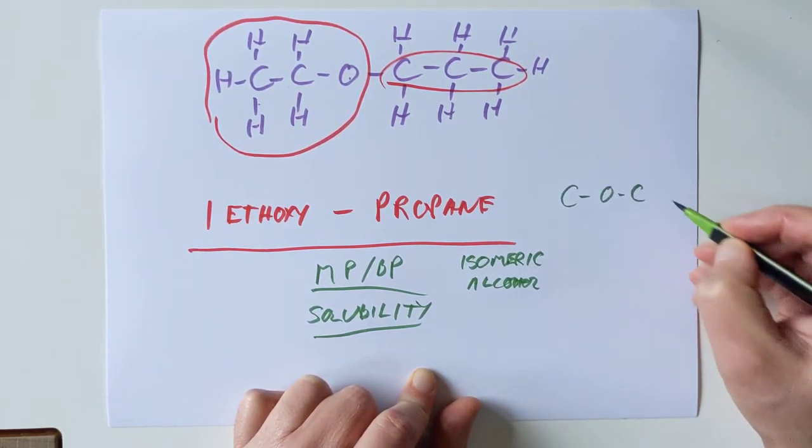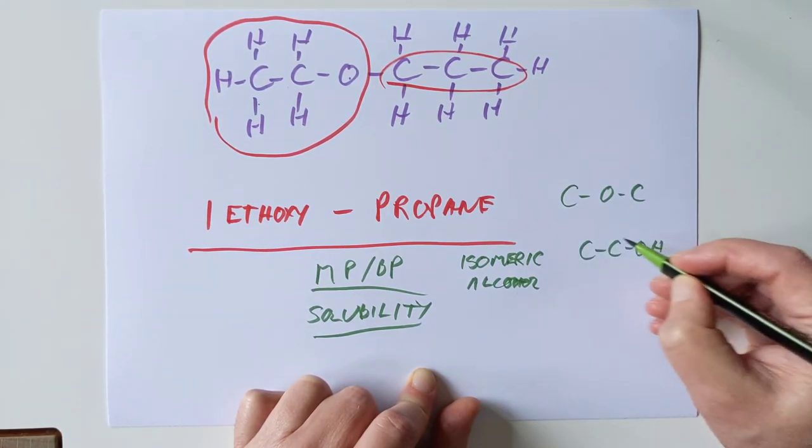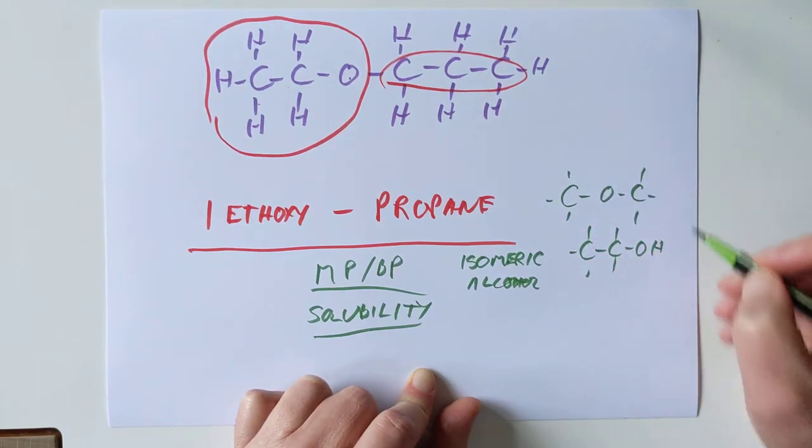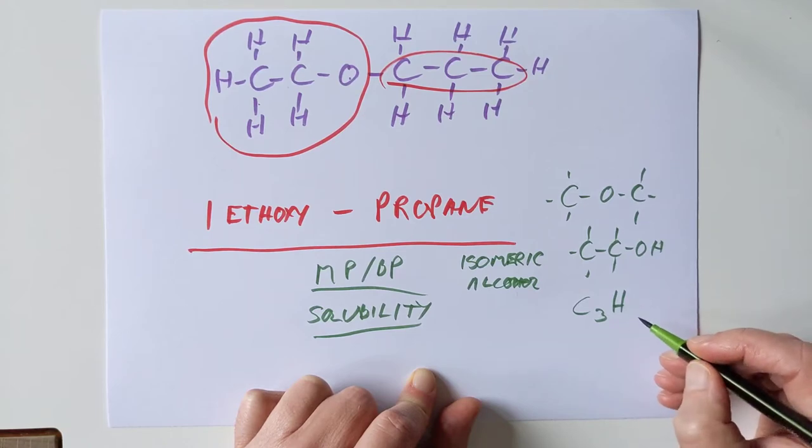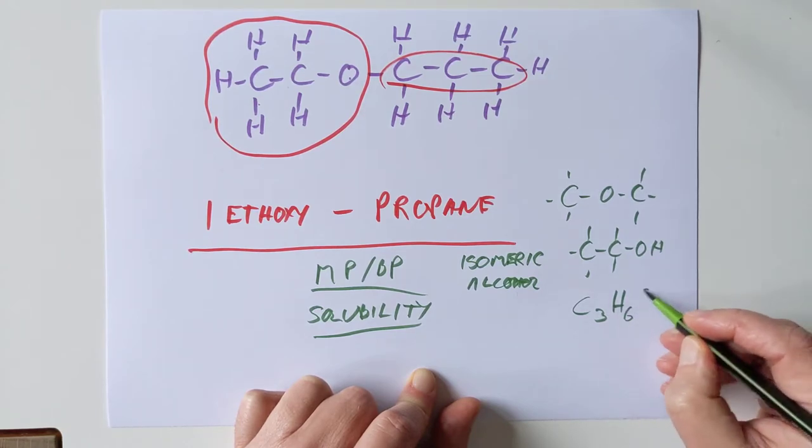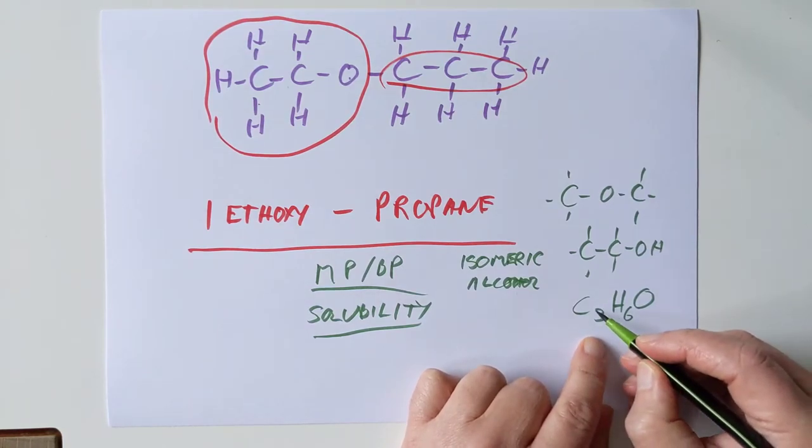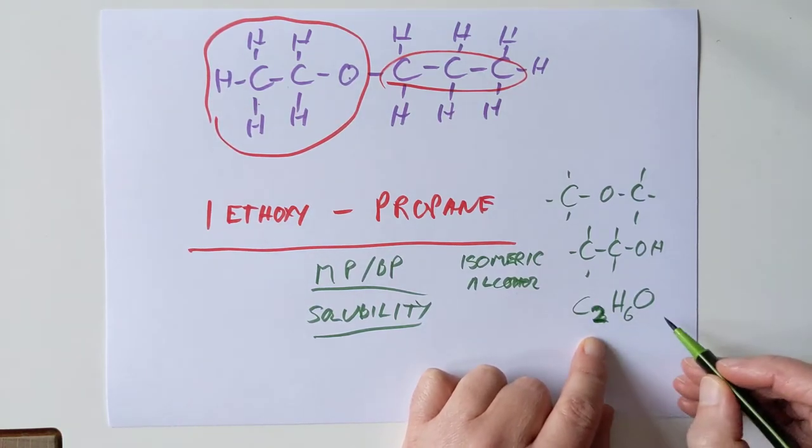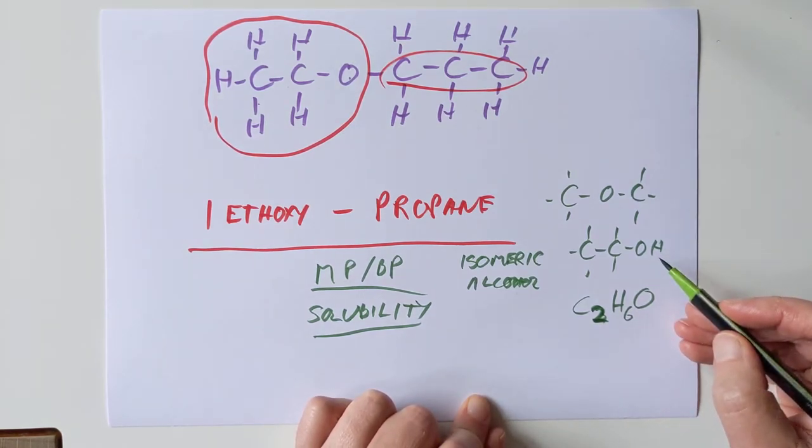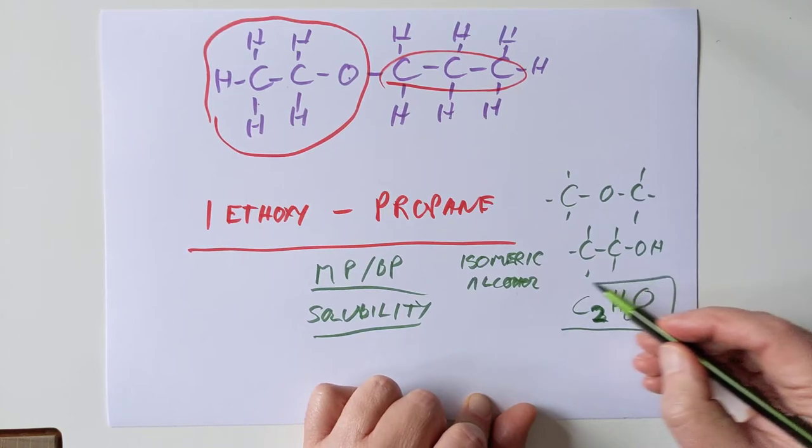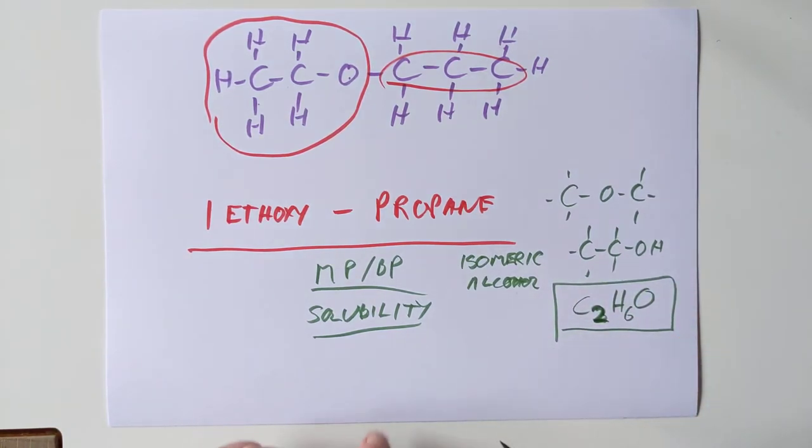So if you have the simplest ether there, and we compare that to a two-carbon alcohol, they are both C2H6O. So if they're being sneaky, be wary of formulas like that. It could be an alcohol, it could be an ether. But there is an easy way to tell.